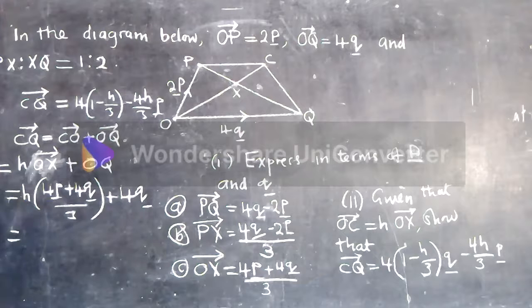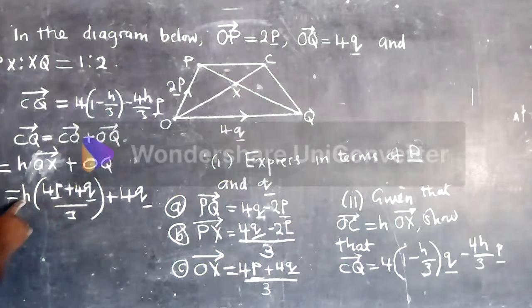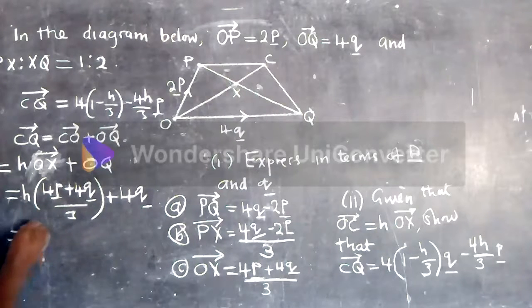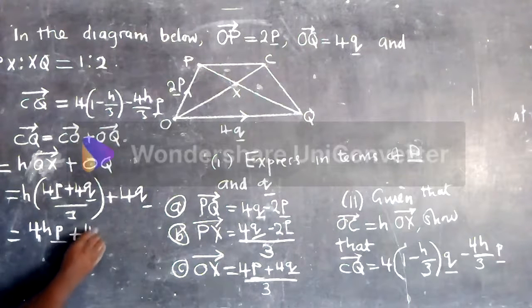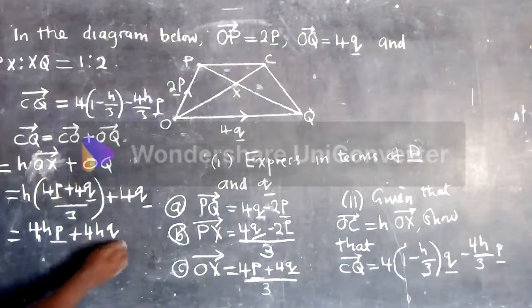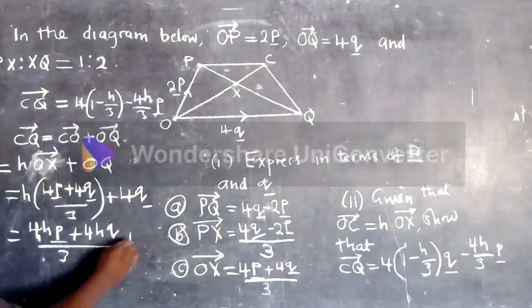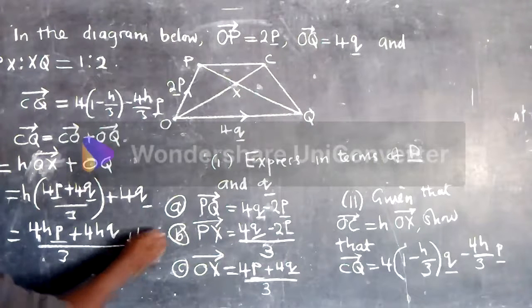We can now multiply. We distribute H. So it will be 4HP plus 4HQ over 3 plus 4Q. Alright, so it looks good.